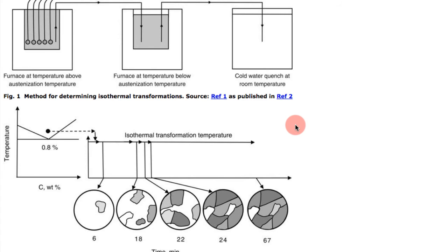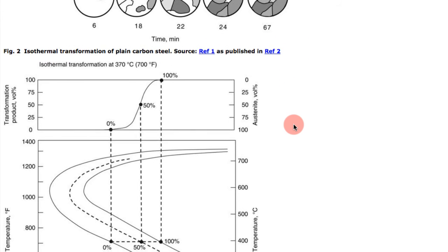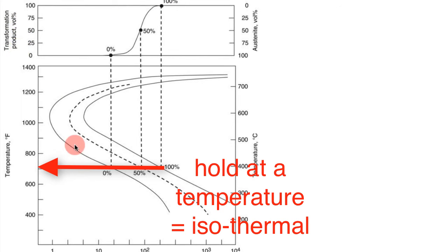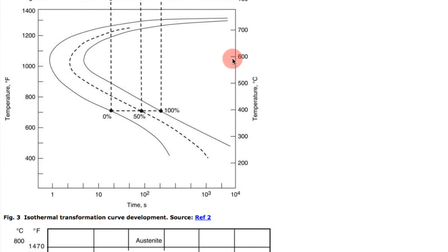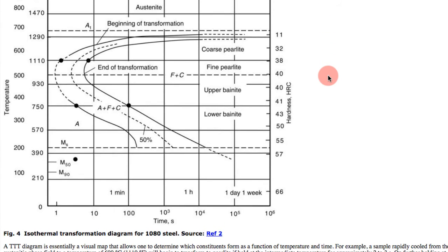Then you map that into this diagram down here, going from zero to 50 to 100 percent of the transformation volume. That is mapped down at the temperature that you're analyzing. These diagrams are developed by conducting that kind of experiment at these different temperature ranges.